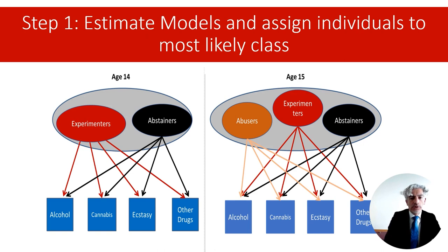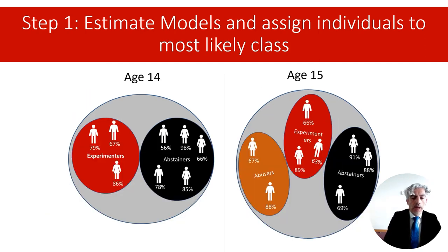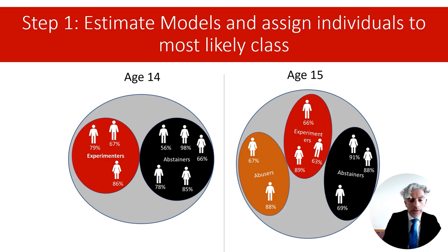As a practical example, assume that at each time point we have separately estimated models with two latent classes at age 14 and three latent classes at age 15. The issue may be complicated by measurement invariance, and in the exercises I provide more guidance on these. Having selected the best measurement models at each time point, we can assign individuals to an underlying latent class based on their posterior probabilities, as shown in this example with individuals assigned to different classes and the probability of being in that class.